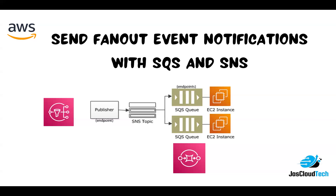Here you can see a simple example — we have a publisher endpoint, an SNS topic, and SQS queues subscribed to it. We can send the number of orders placed to an EC2 instance that will process the order, and to another EC2 instance for analytics — like order quantities, various analyses. Instead of separately polling messages and verifying delivery, we can have an automated setup where SQS is added to SNS.